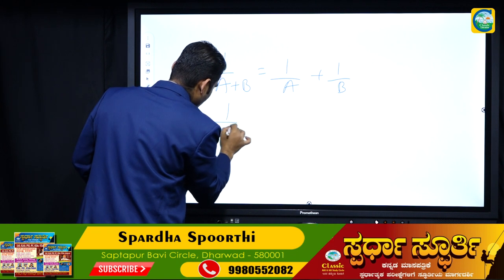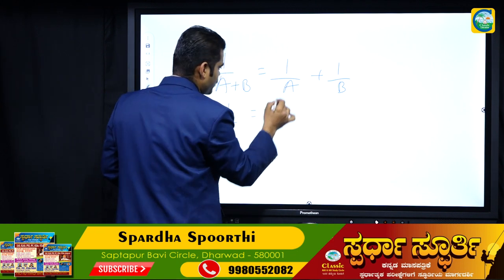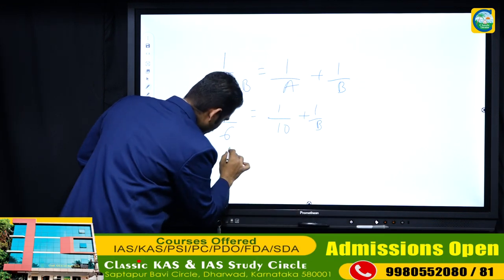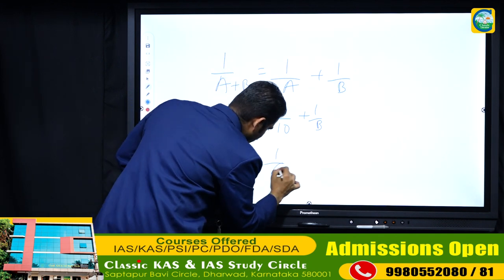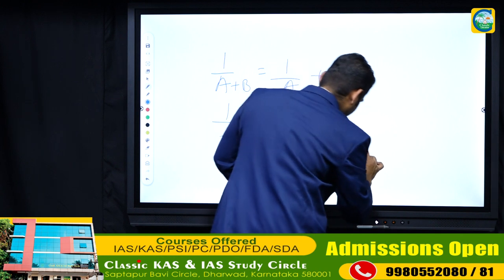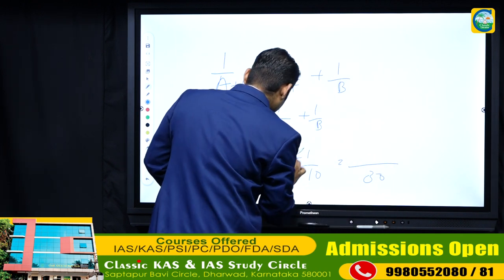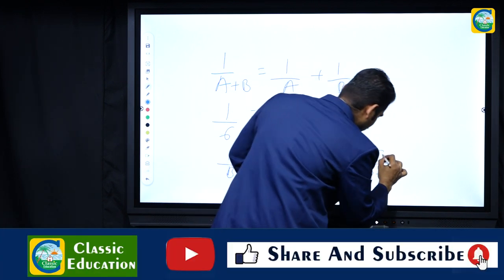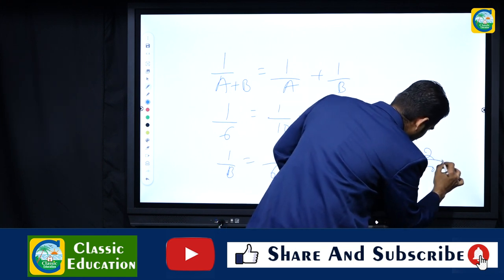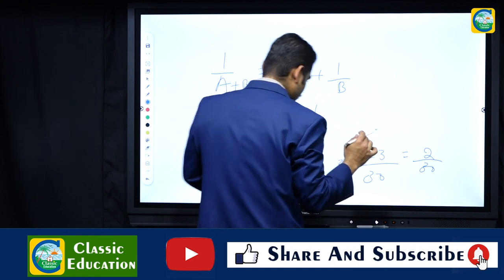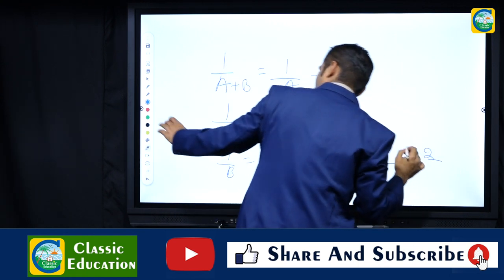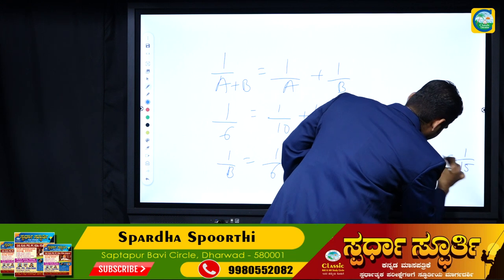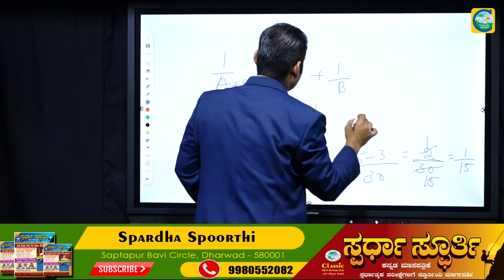So 1 by A plus B equals 1 by 6. Work done by B in one day equals 1 by 6 minus 1 by 10. Taking LCM of 30: that gives 5 minus 3 over 30, which equals 2 by 30, which equals 1 by 15.